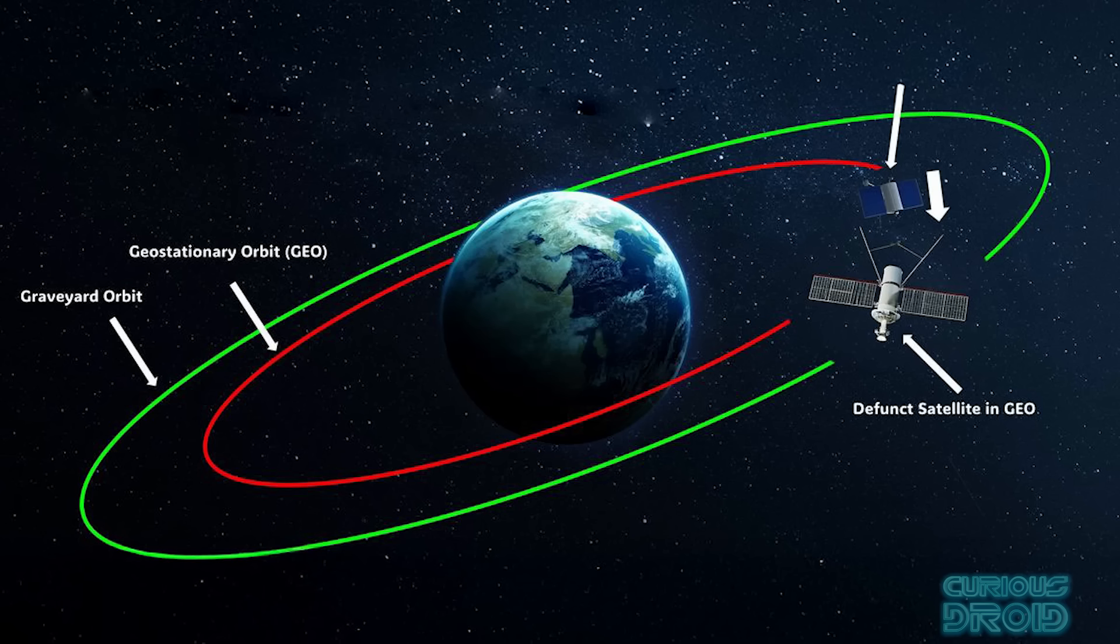From 2002, the FCC required all operators of satellites serving US territories that could not be safely de-orbited that they had enough fuel on board at the end of their life to be moved to the graveyard orbit. That's one that is high enough, usually beyond the geosynchronous orbit, but it will be well out of the way and will take millions of years before it will make its way back to earth.